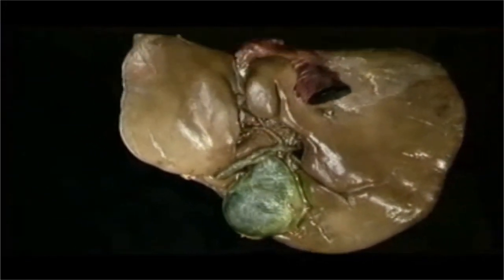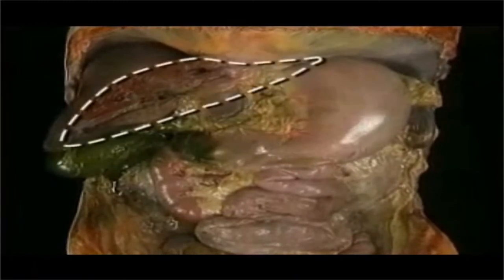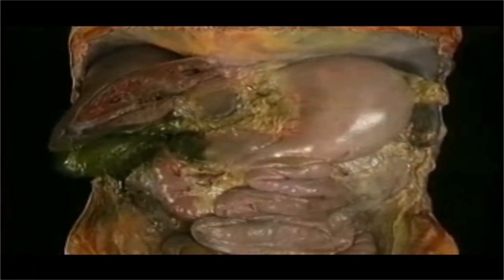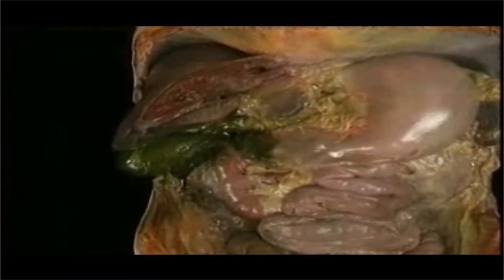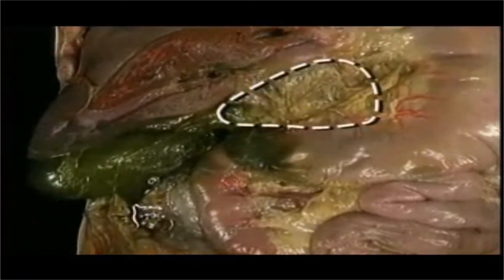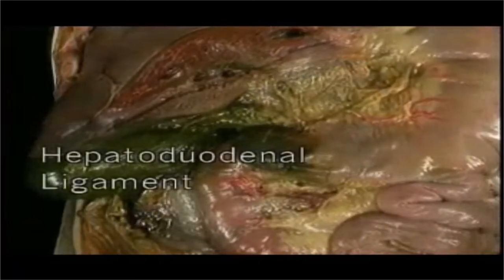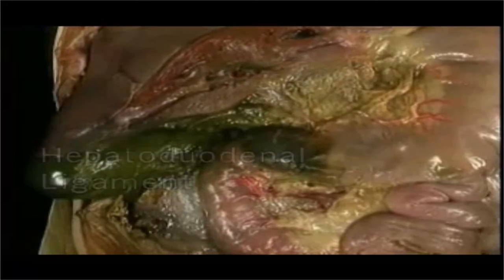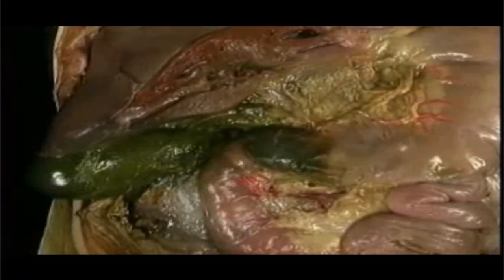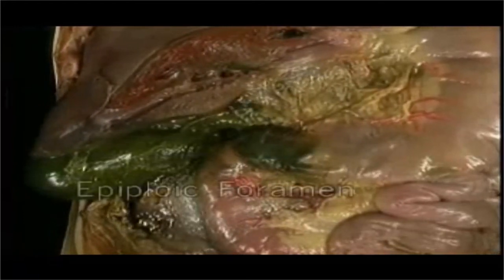To follow the common bile duct, we'll go to an intact dissection seen from in front. We've removed the left lobe of the liver and the transverse colon. Here's the gallbladder. Here's the lesser curve of the stomach. Here, between the liver and the first part of the duodenum, is the thickened lower part of the lesser omentum, also called the hepatoduodenal ligament — it's quite darkly stained with bile in this specimen. The common bile duct lies within it, quite close to the epiploic foramen, which is here.